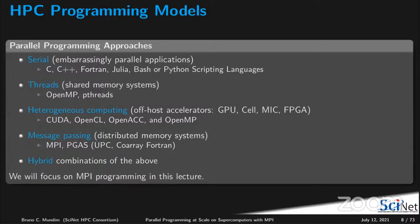In terms of parallel programming approaches: if you are lucky, the parallelism you're looking for is basically a parameter sweep — running the same serial code over and over for different parameters, with a little post-processing at the end. Those are embarrassingly parallel applications. You can use compiled languages like C, C++, or Fortran, or Julia with JIT compilation, or scripting languages like bash and Python, which are slower because they are interpreted line by line. You did an exercise on that last week with Ramses.